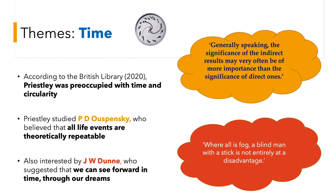Some of the main themes of this play. Firstly, let's take a look at time. According to a British Library article, Priestley was preoccupied with time and circularity. In the play, there is an element of this — we start with an inspector and the Burling family and go through the details of an investigation, the inspector leaves, and then near the end of the play, the phone rings and another inspector calls. So there could be a repetition, or the Burling family may change the course of their life.